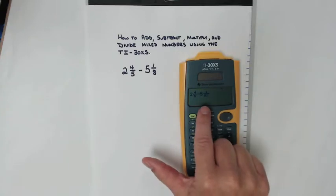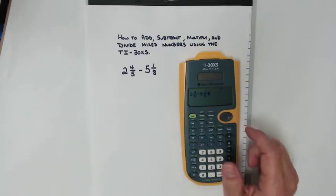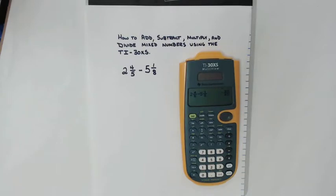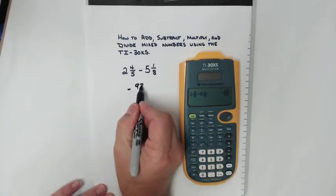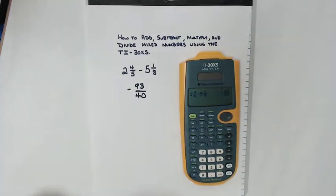Once I get finished creating that mixed number right there, use the circular pad to move over or you can just hit enter. Once I hit enter, there's my answer right there. Negative 93 forties. I've got other videos on how to change this into a mixed number if you need to do that.